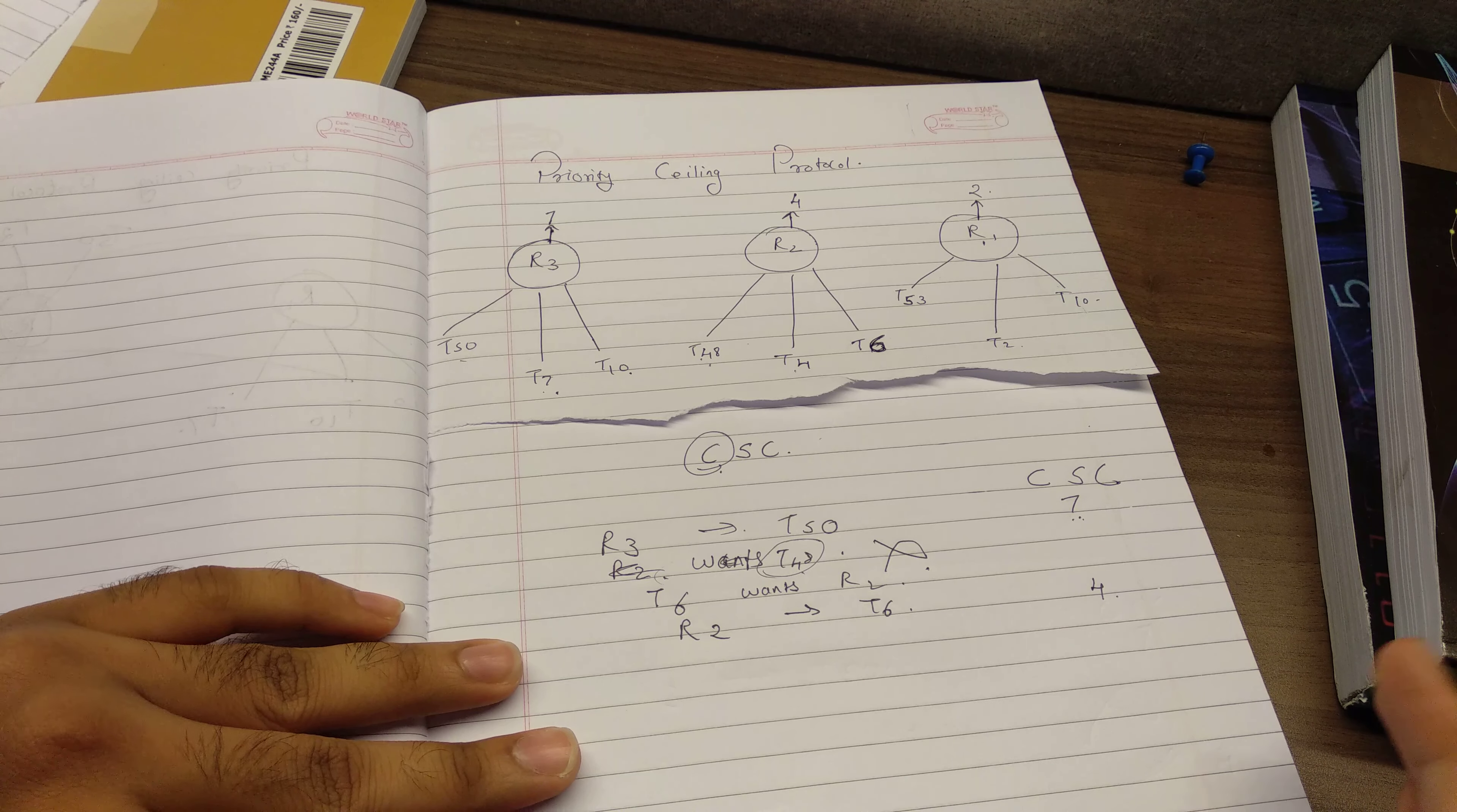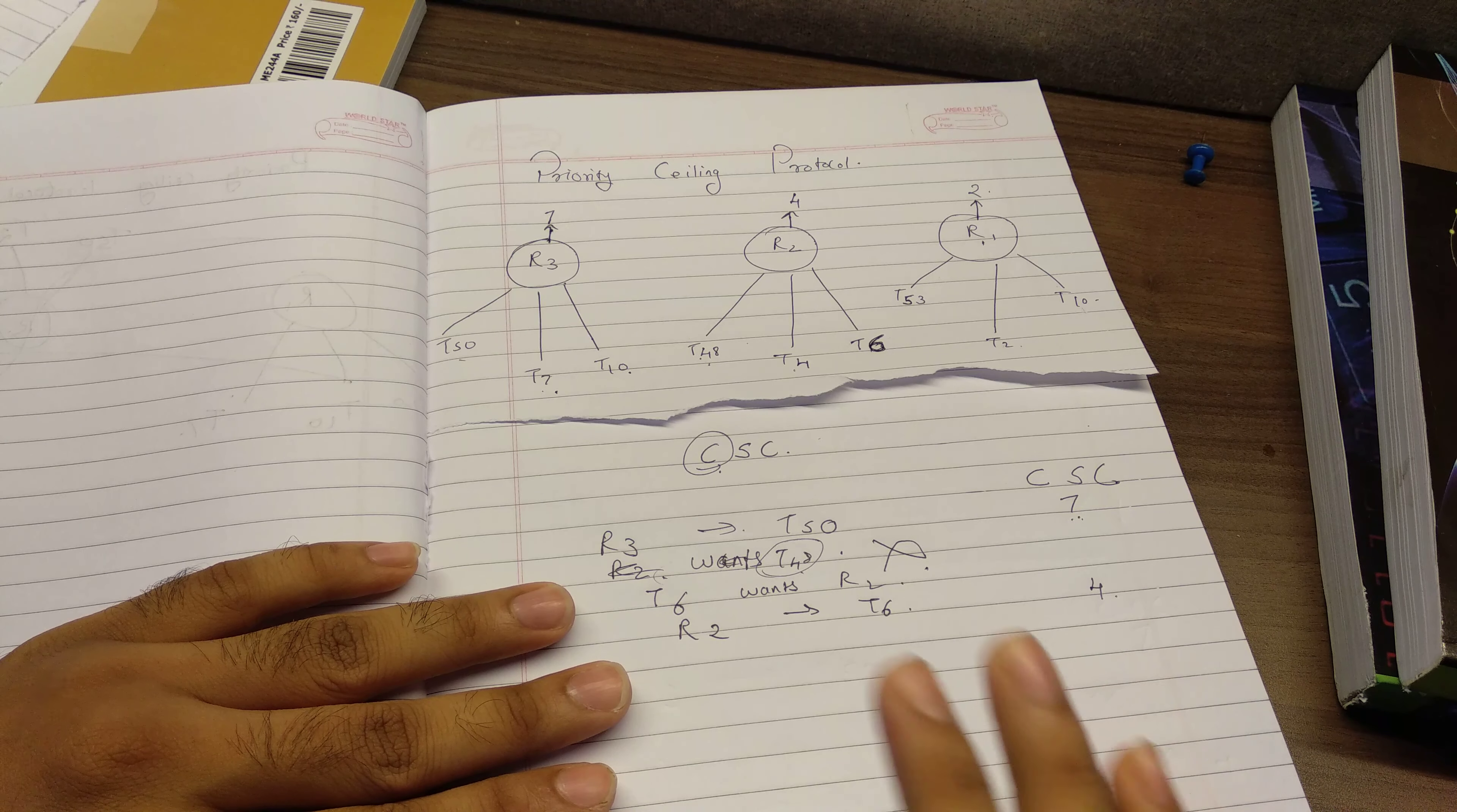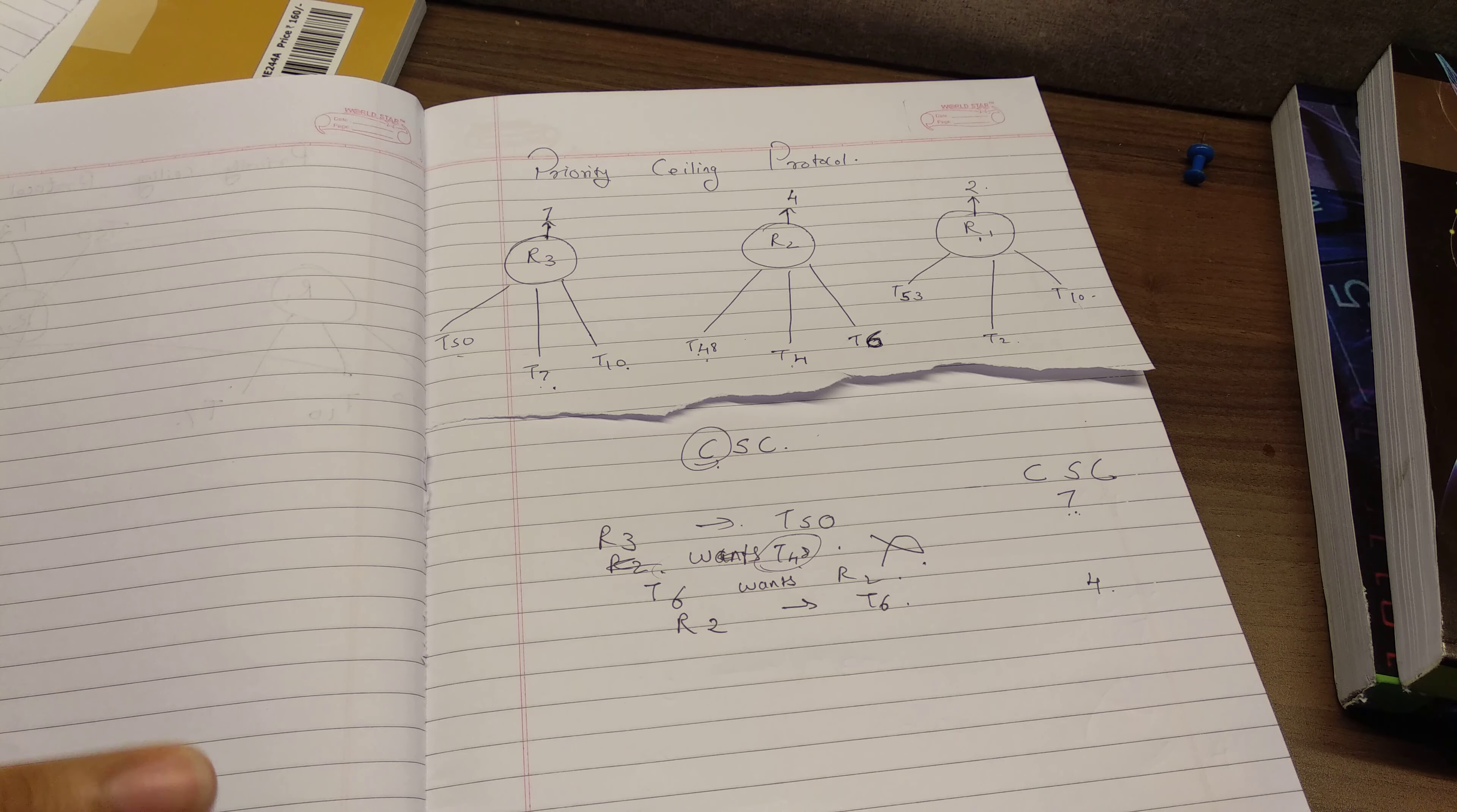Again, if another any other task having priority more than or equal to, or more than 4 will not be granted resource R2.